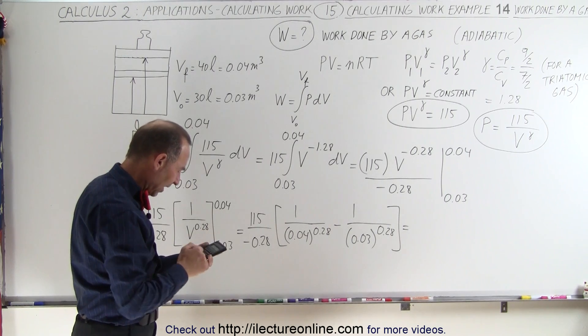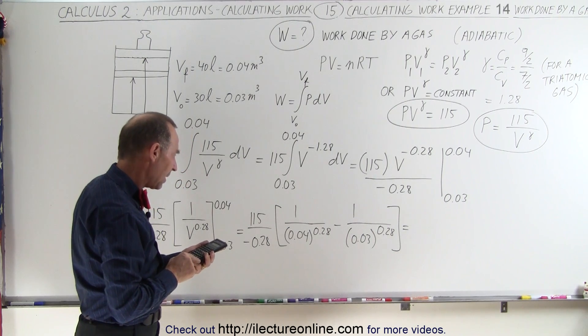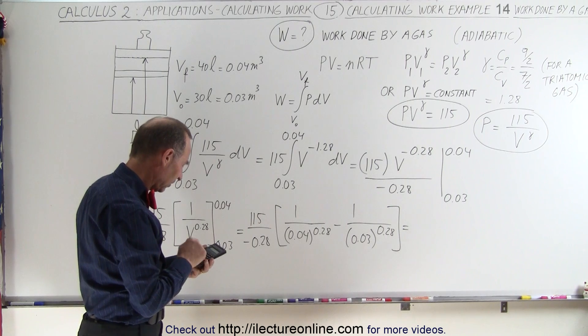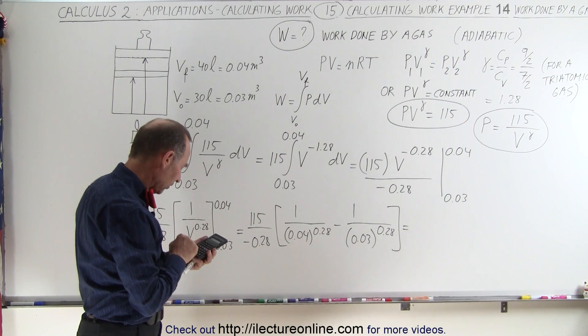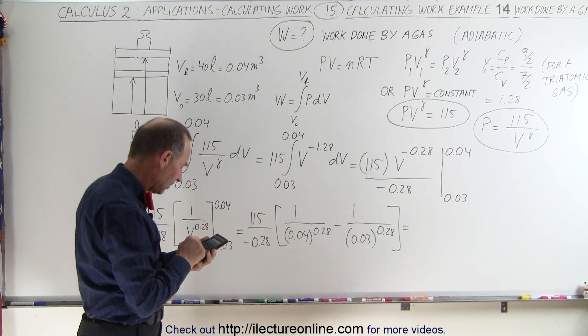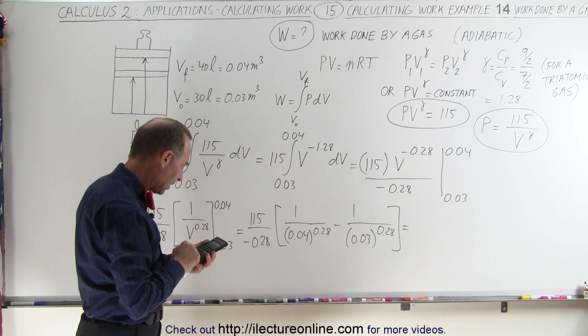We take the inverse of that and then we put a negative sign in front. Now we're going to subtract that from plus 0.04 raised to the 0.28 power, take the inverse of that, and now equals.